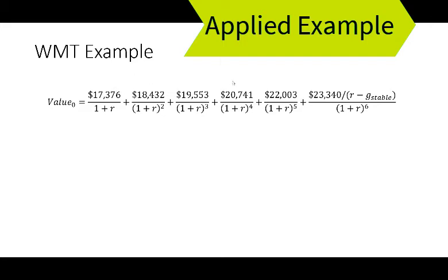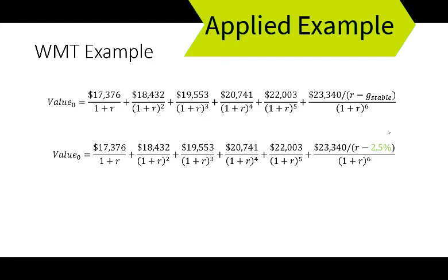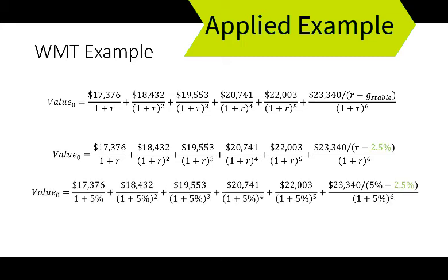Using that 6.08% growth, I can fill in the numerators for next year's free cash flow to equity, growing each year by 6%. Then I need to estimate a stable growth rate — I'm going to go with two and a half percent, which seems reasonable long term for Walmart. And finally that little R — always the hardest part to estimate. You can try a number of different values and see how that changes the valuation.